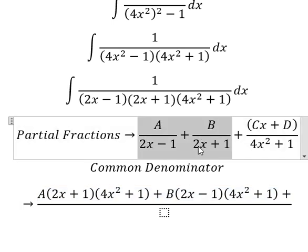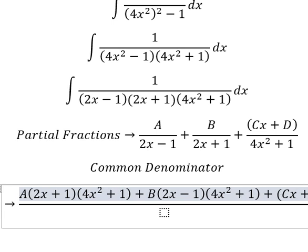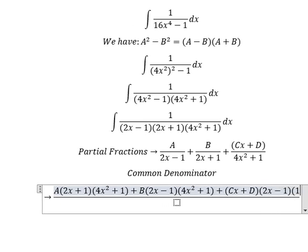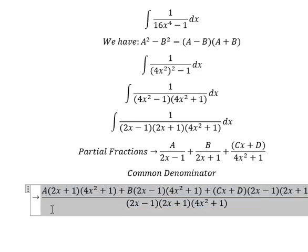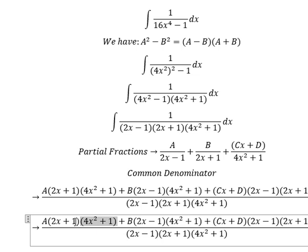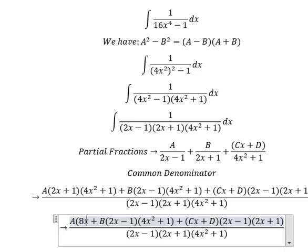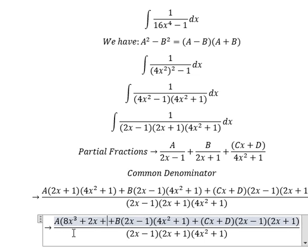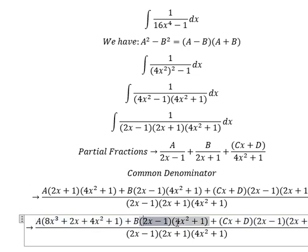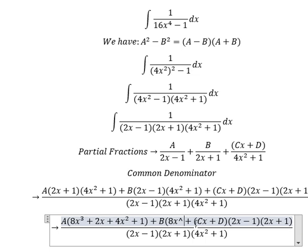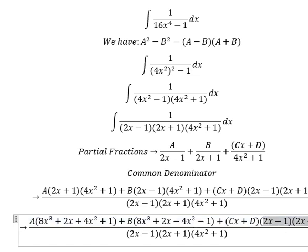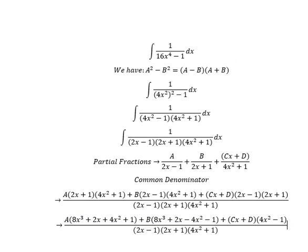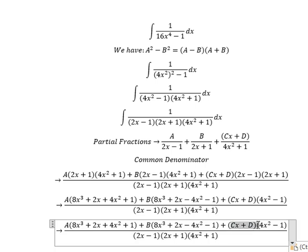And the last term is about this one. So we need to expand this: that is about 8x to the power of 3 plus 2x plus 2x minus 4x squared plus 1. Now we need to expand the B term: that is 8x to the power of 3 plus 2x minus 4x squared minus 1. And this one is about 4x squared minus 1.